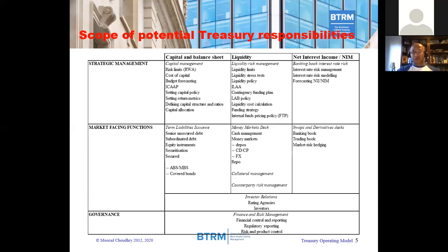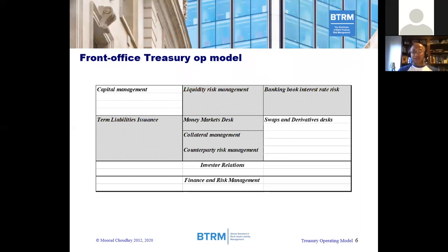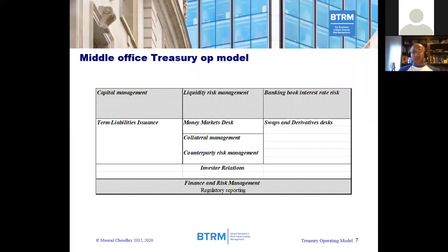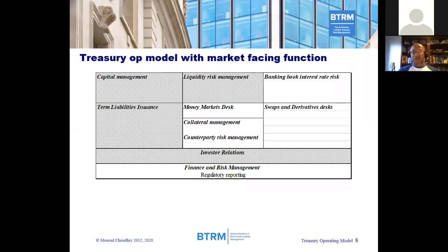We're going to show some alternative operating models. The most common one is the front office model. This function is responsible for liquidity risk and banking book interest rate risk, as well as wholesale markets debt issuance, the money markets desk, collateral management, and wholesale counterparty risk management. A middle office treasury operating model doesn't have that external market access function; it manages balance sheet risk with respect to capital, liquidity, and interest rate risk. A hybrid version would have some aspects of middle office responsibility but also some aspects of front office responsibility — for example, term liabilities within treasury, but money markets desk, collateral management, and derivatives hedging undertaken elsewhere.